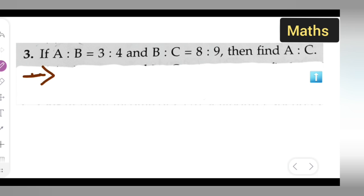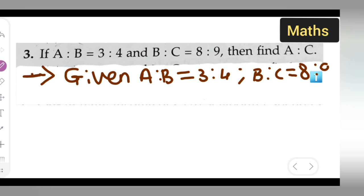Now write down what is given first. Given: A ratio B is equal to 3 is to 4, and B ratio C is equal to 8 ratio 9. So basically here, clearly it is said that the value of A is 3, the value of B is 4, but here the value of B is 8 and C is 9.